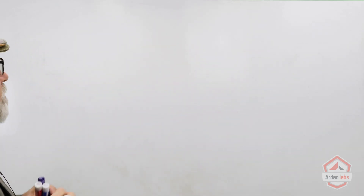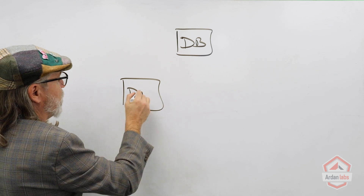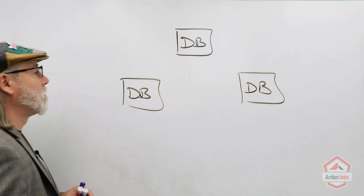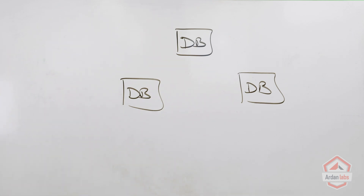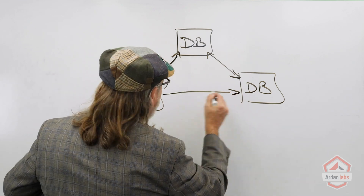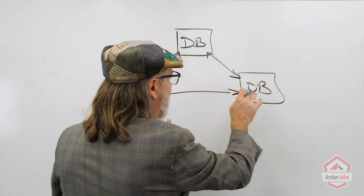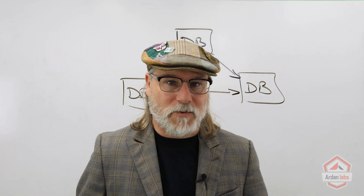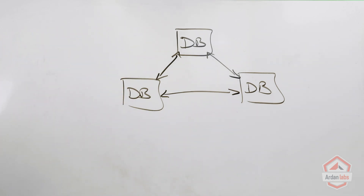Let's start with the idea that we're going to have three databases — let's put them on the board. We'll write three copies of the same database. Let's say this one is in Miami, this one is in London, and this one is in Sydney. The very first thing we're going to need to do is establish a peer-to-peer network where, in the simplest case, every database has a connection to the other databases — we just keep it simple for now.